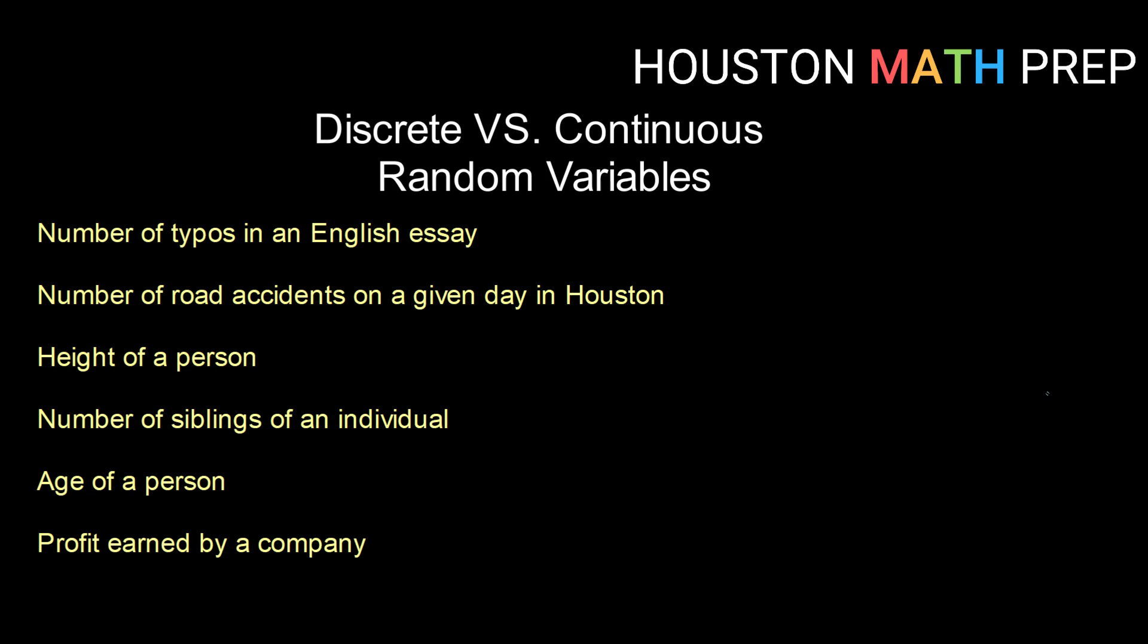So the first one, the number of typos in an English essay. So the question that I like to ask myself is, is that a measure or is that a count? I would say that if I was trying to figure out how many typos in an English essay, I would be counting those. You could have zero typos if you're lucky. Maybe you have one, two, three. Those are counts. So that's going to be discrete.